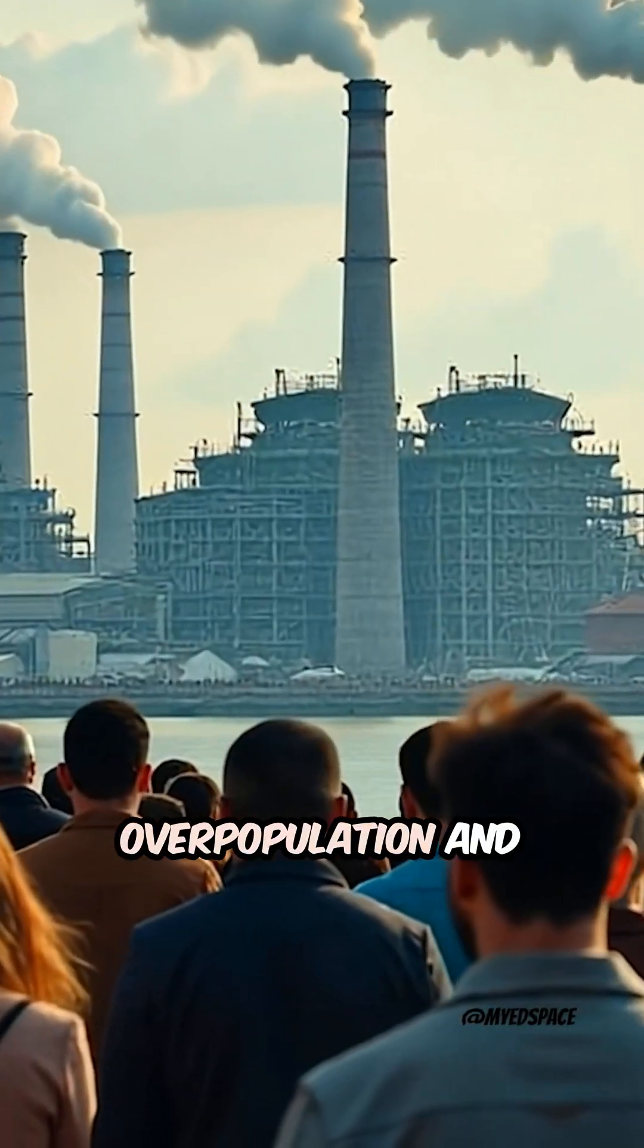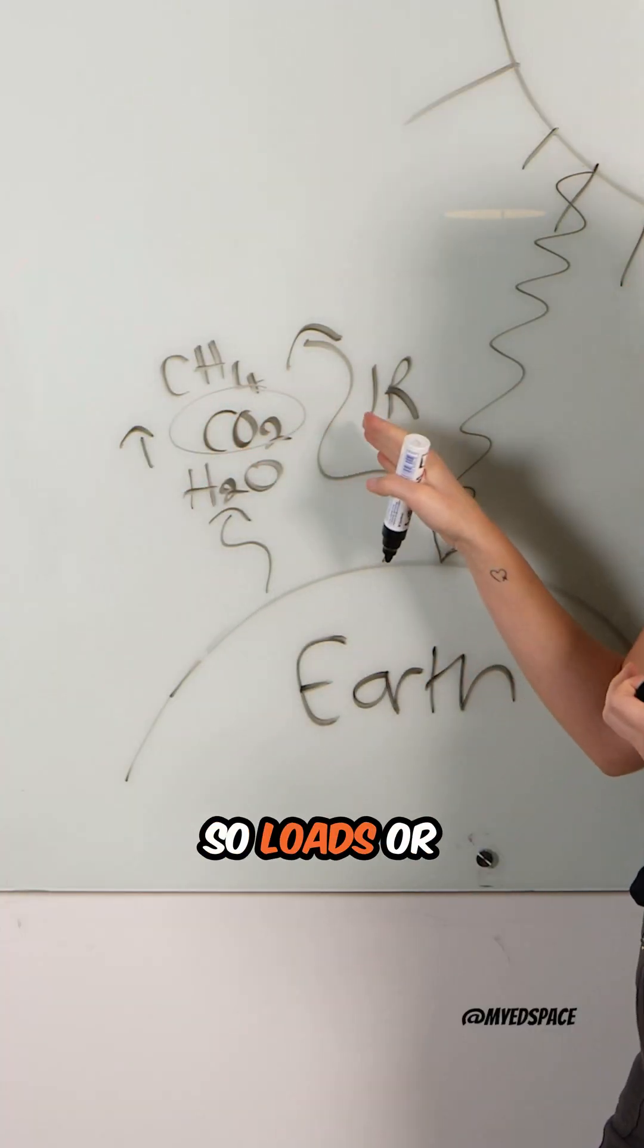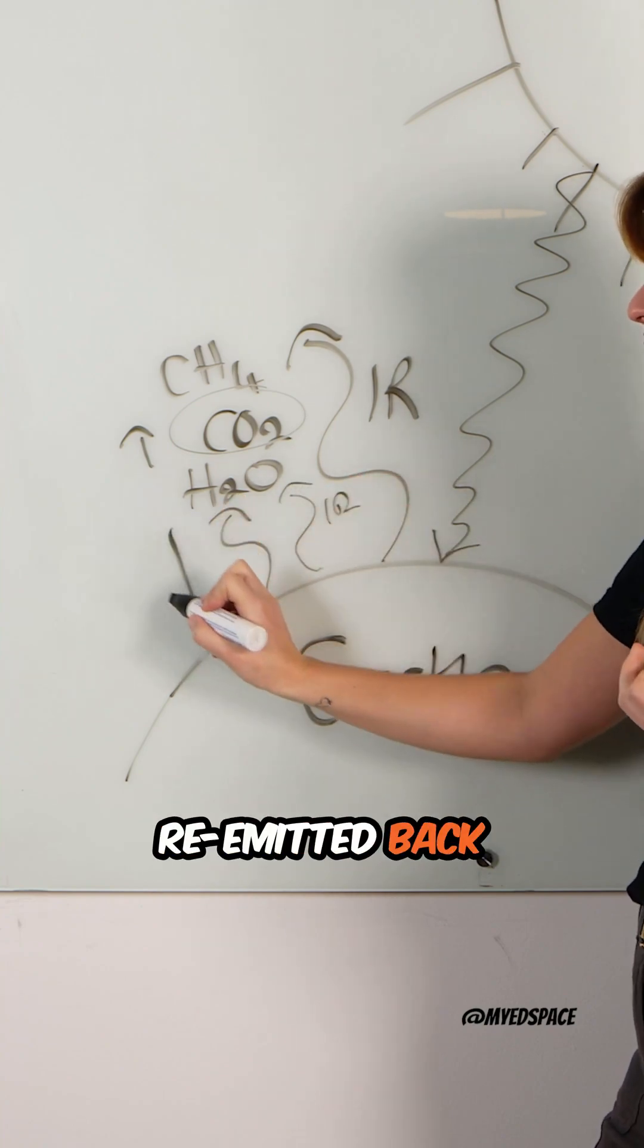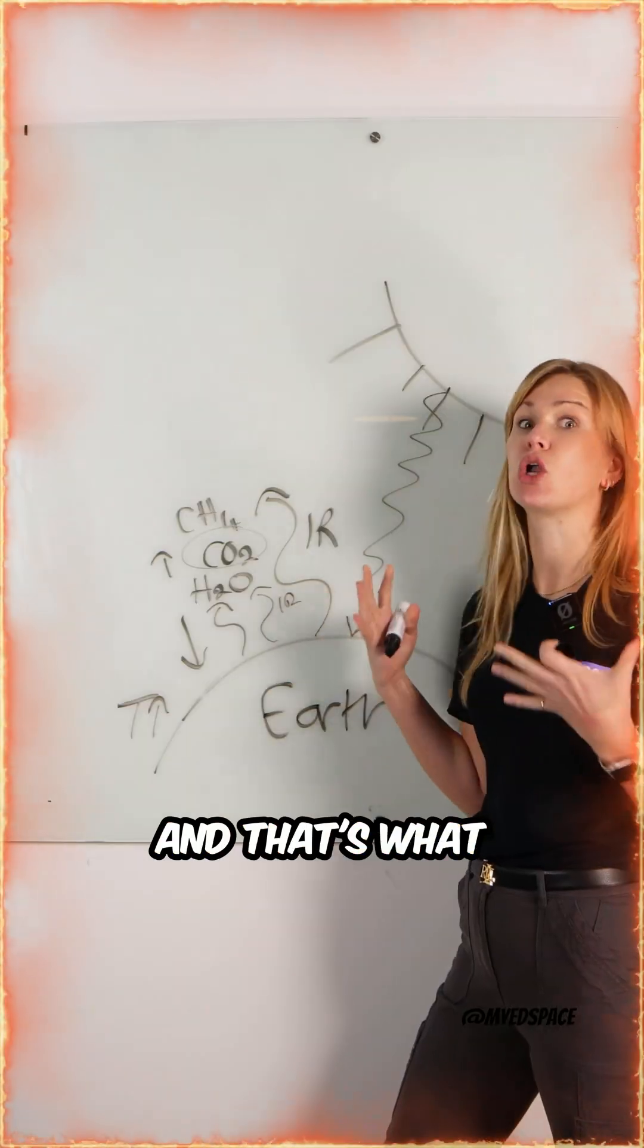But the problem is, because of overpopulation and industry, there's too much of these gases now in our atmosphere. So more of these infrared radiation waves are getting absorbed and re-emitted back towards the Earth, causing the temperature to increase. That's what global warming is.